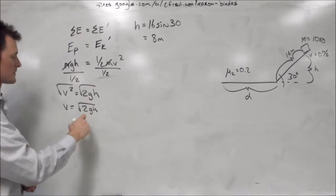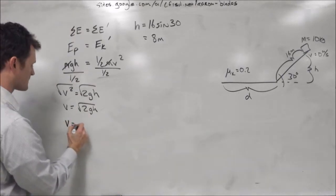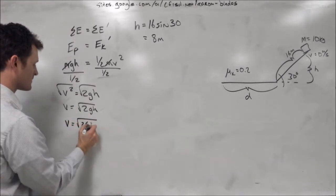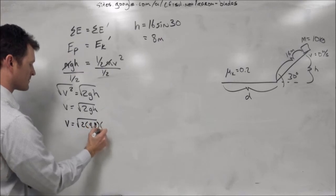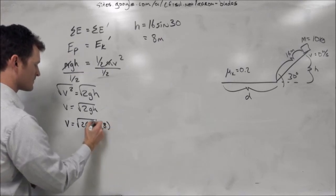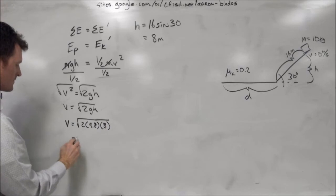We can put that into our equation, and the square root of 2gh is 12.52 meters per second.